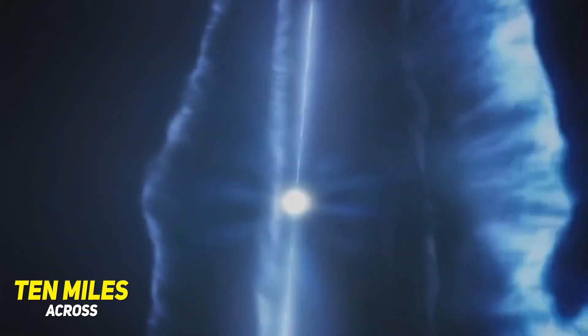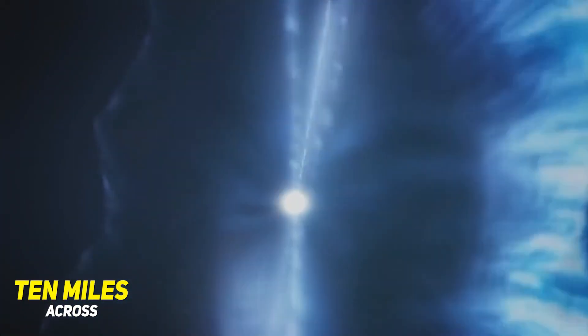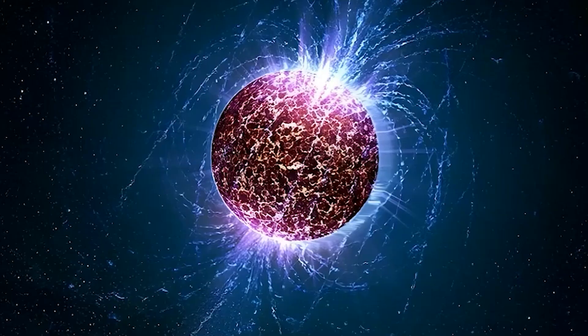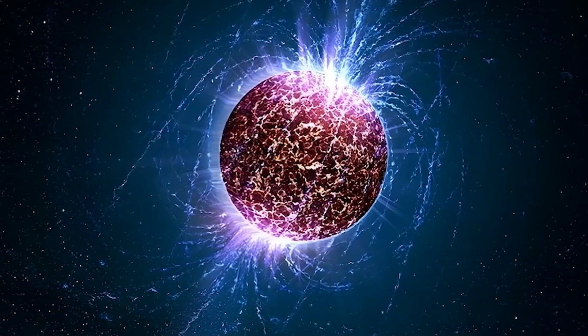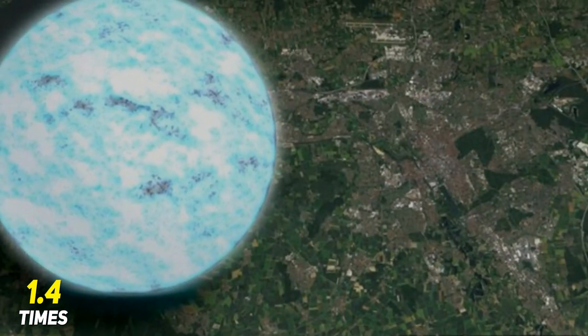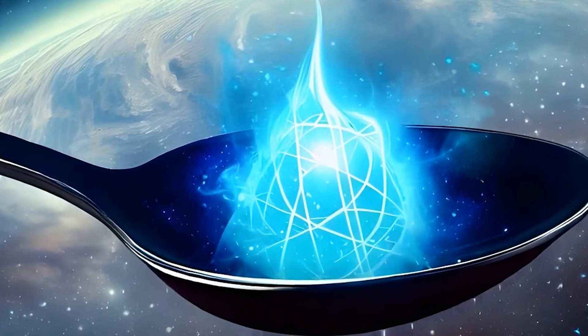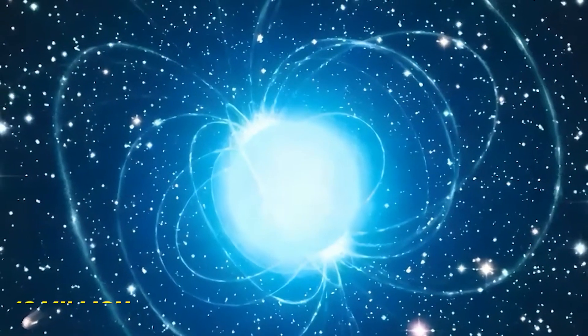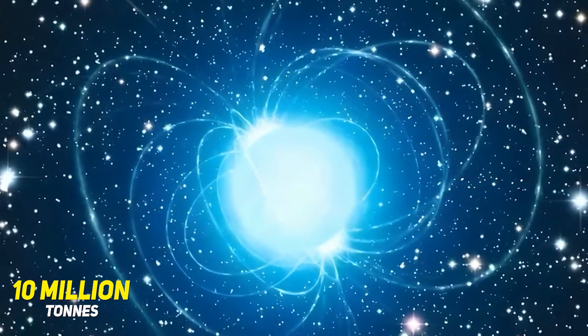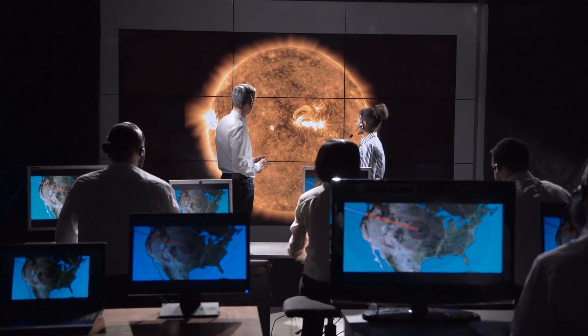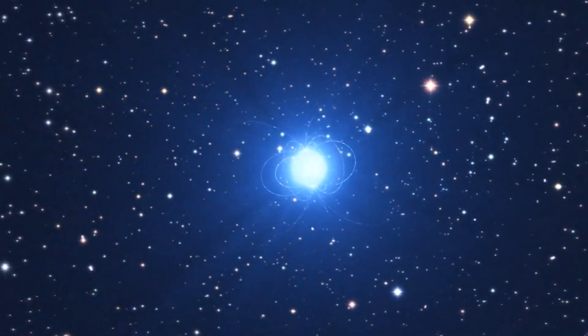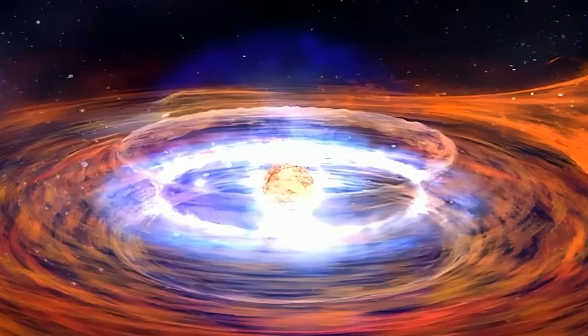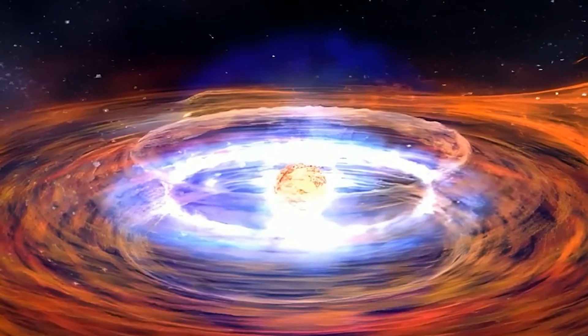At about 10 miles across, a neutron star is tiny compared to other stars, yet incredibly dense, about 1.4 times the mass of the sun. This means that just one teaspoon of neutron star material would weigh a staggering 10 million tons. Scientists speculate that one day these neutrons might tire of holding all that weight, and the structure keeping the entire star together could collapse.